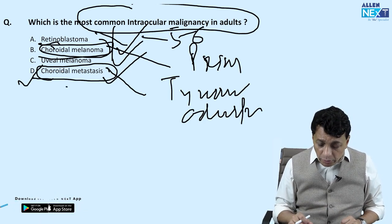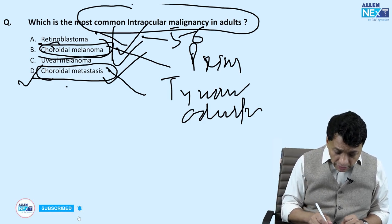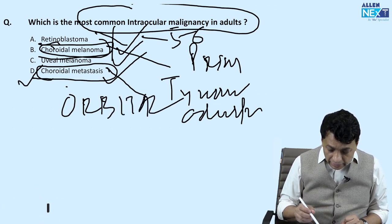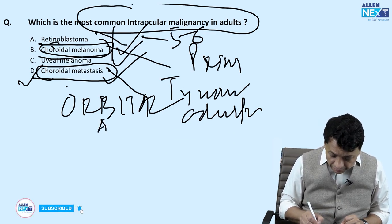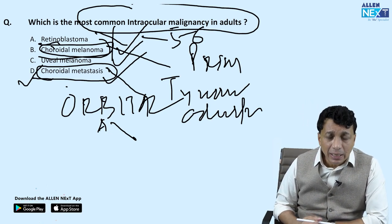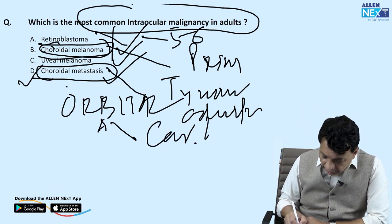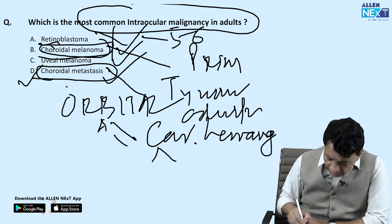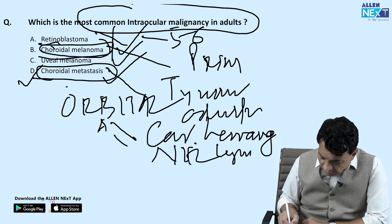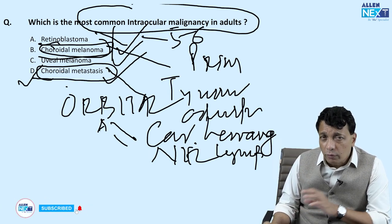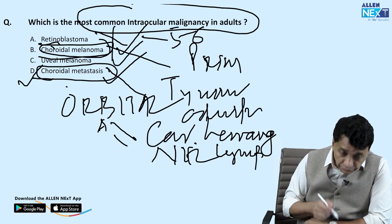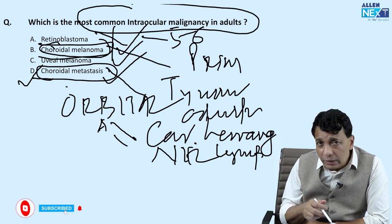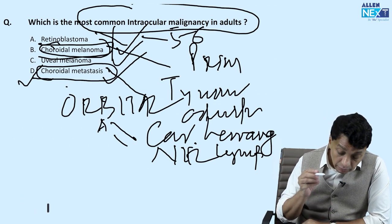As a digression — in orbital malignancy in adults, cavernous hemangiomas are the most common overall orbital tumor (benign), and non-Hodgkin's lymphomas are the most common malignant orbital tumors. In children, the most common orbital tumor is dermoid cyst, and the most common orbital malignancy is rhabdomyosarcoma. Be careful about exactly what the question is asking.